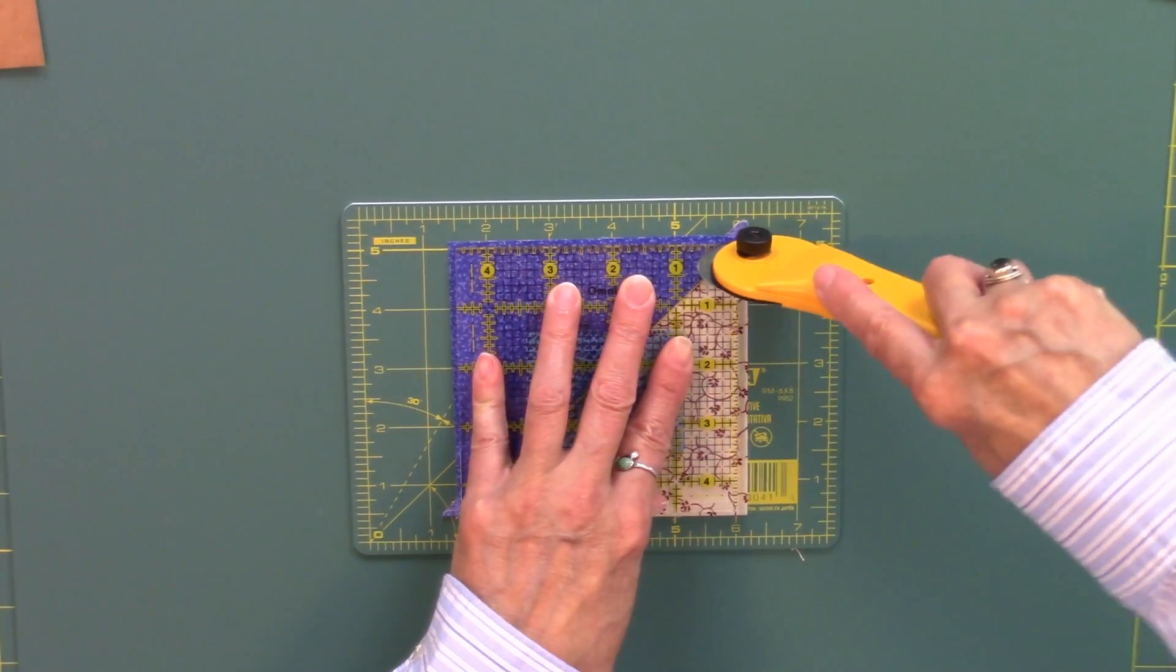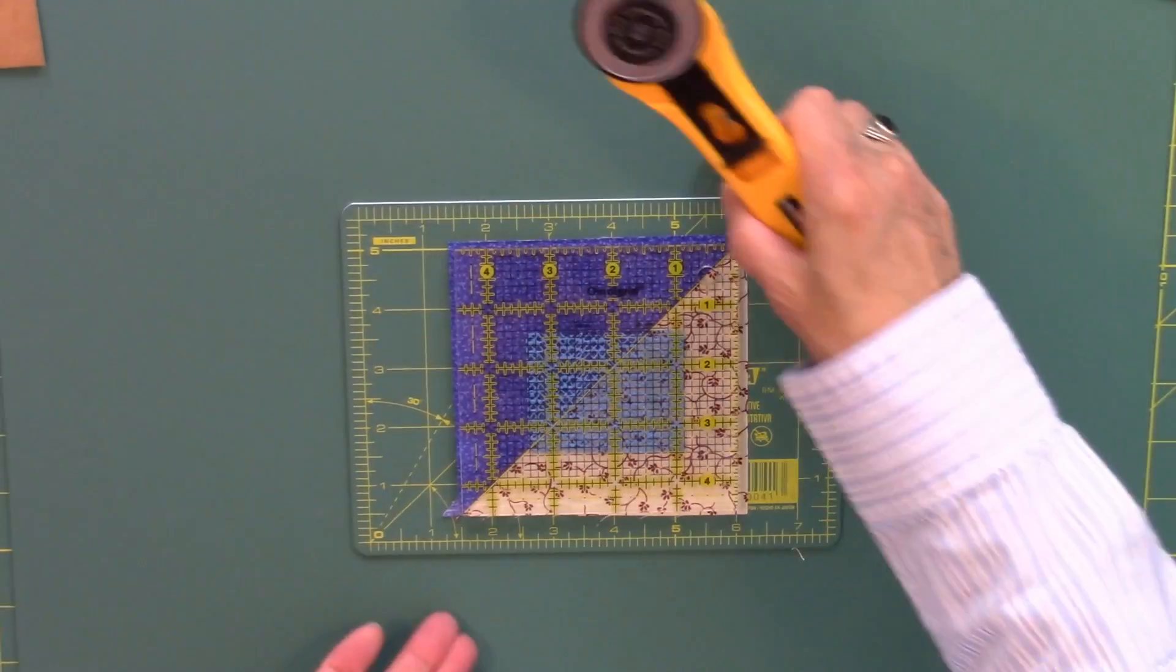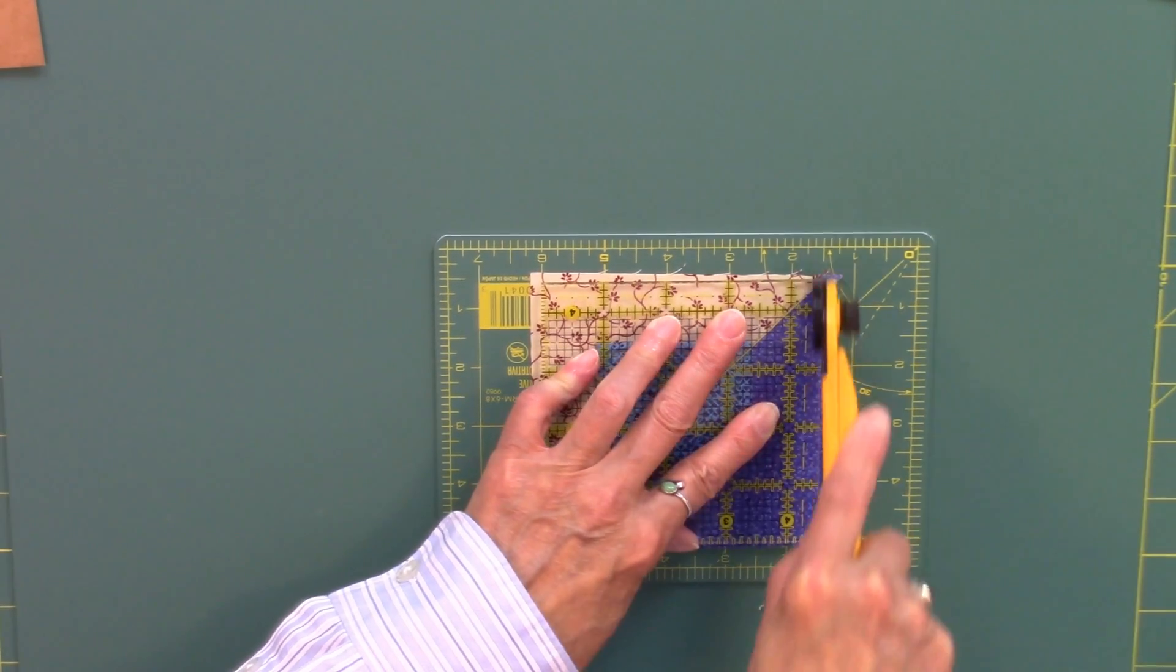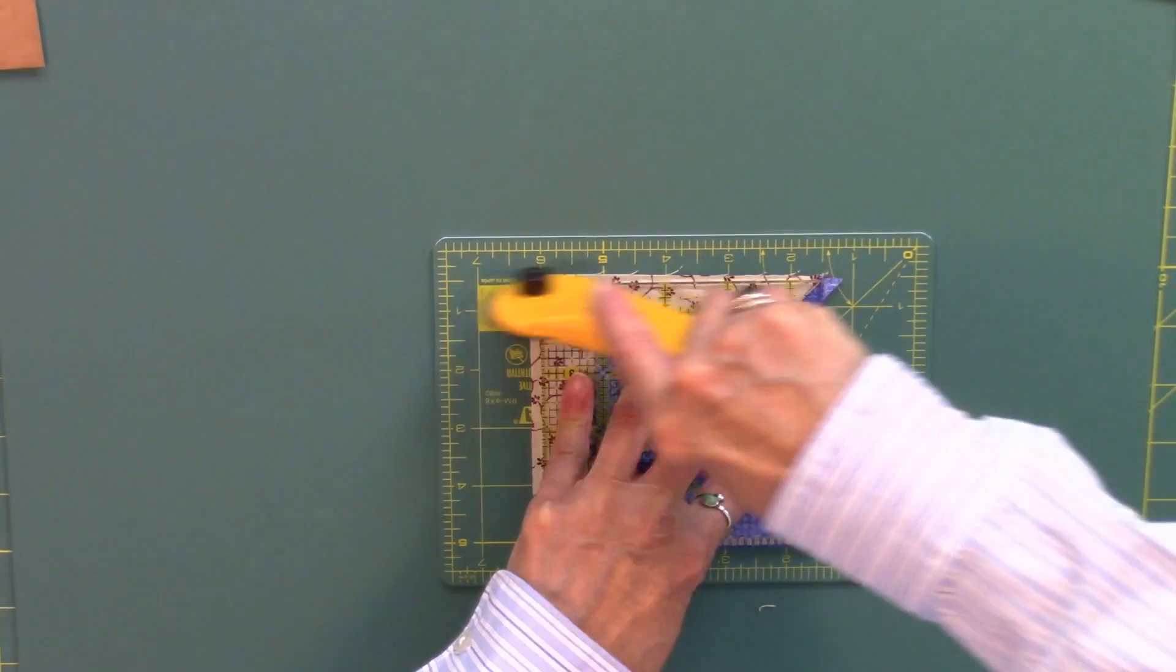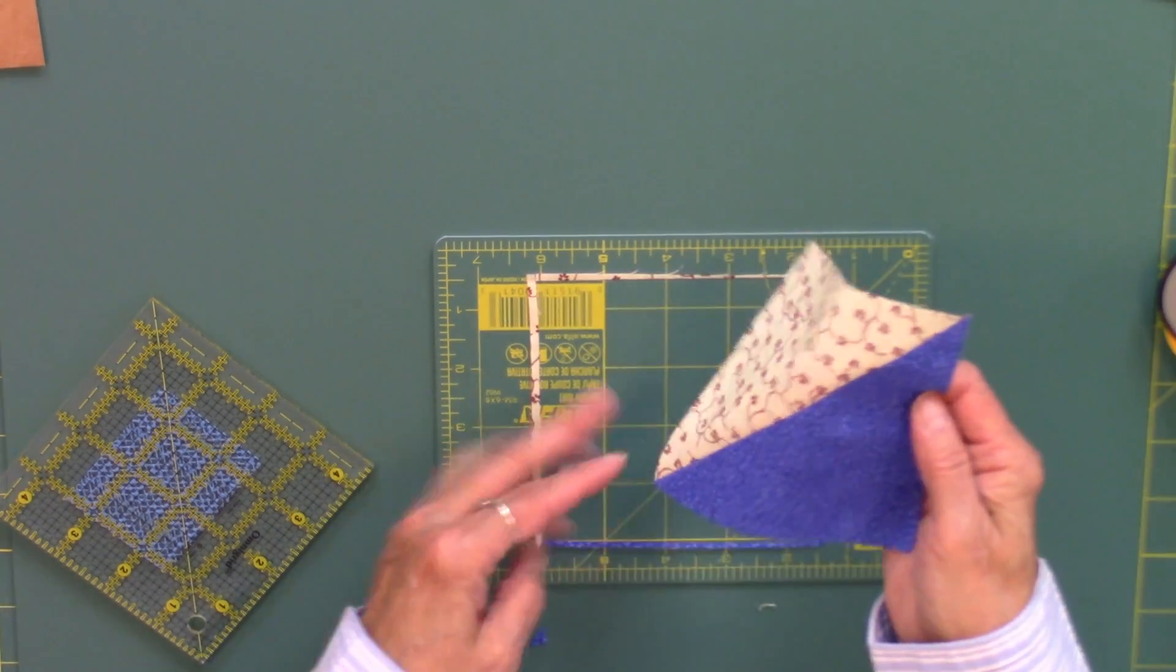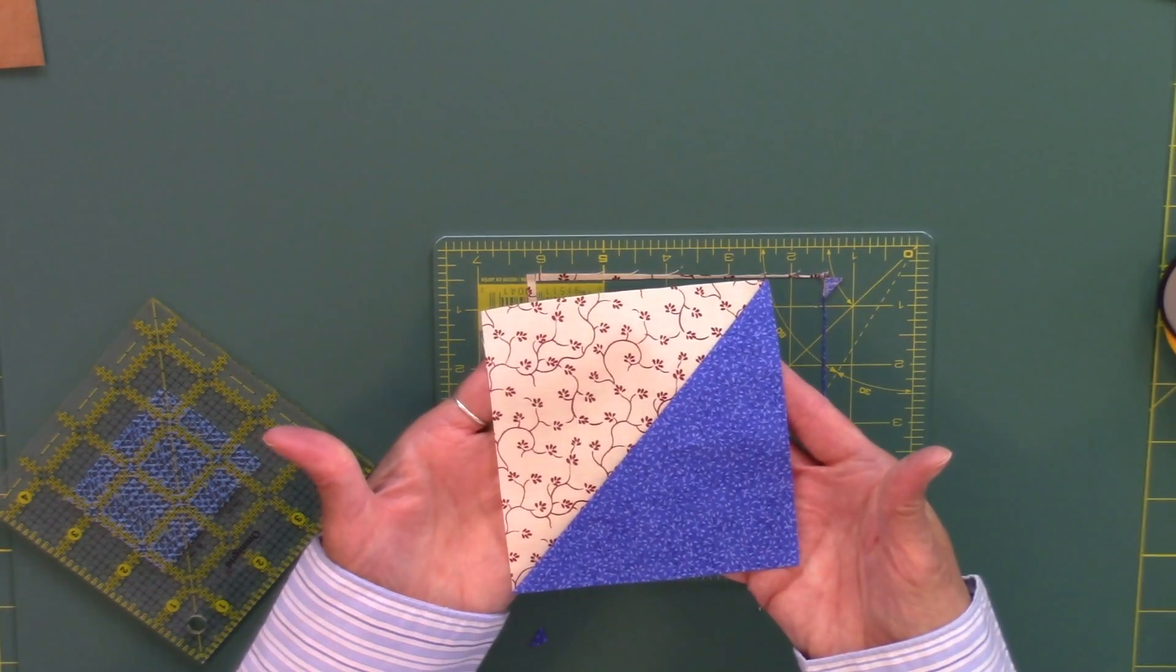Trimming up, trimming over, getting a little bit harder press on those dog ears. I just turn the mat, trim up and trim over and that gives us our four and a half inch half square triangle unit.